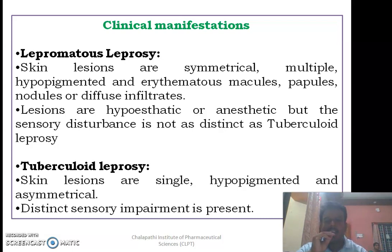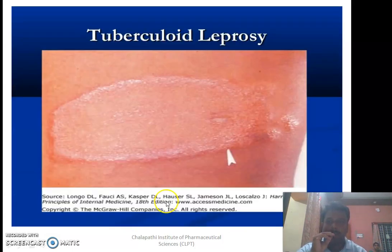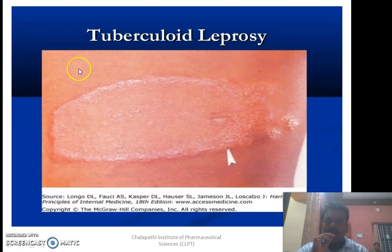In tuberculoid leprosy, skin lesions are single, hypopigmented, and asymmetrical — one lesion differs from another. Peripheral nerve involvement is more pronounced, and we observe distinct sensory impairment in tuberculoid leprosy.